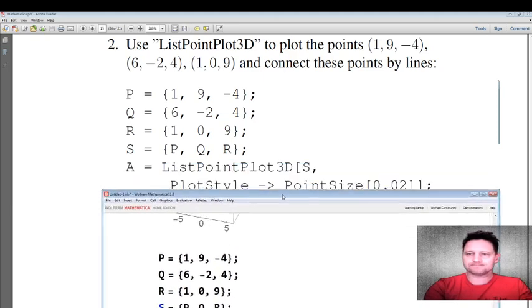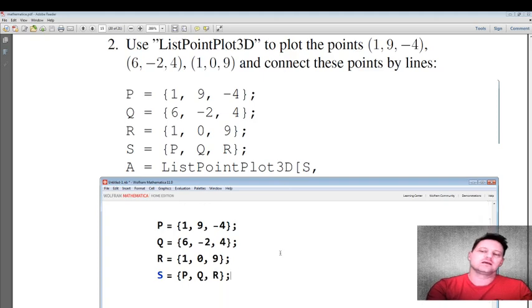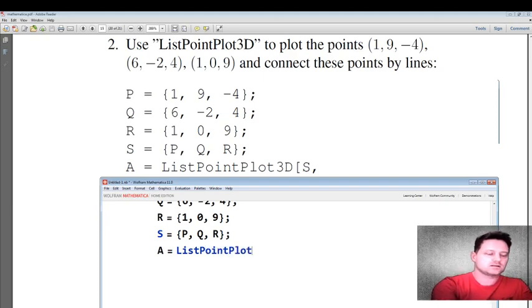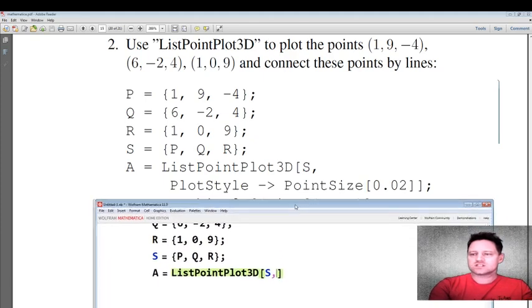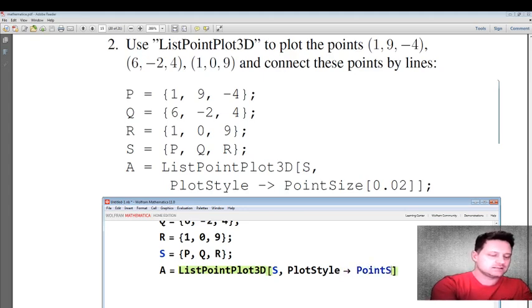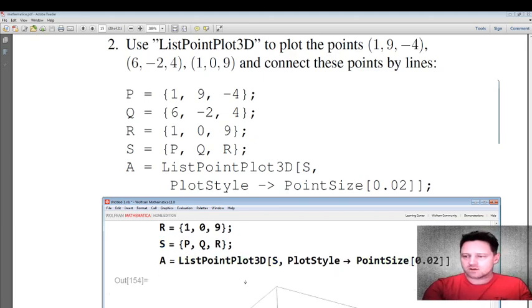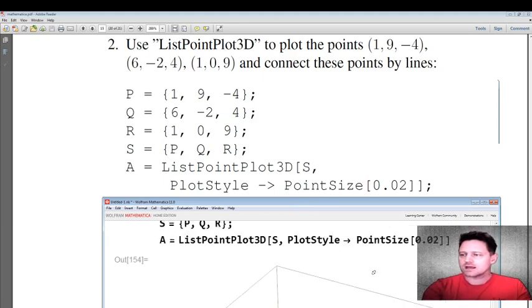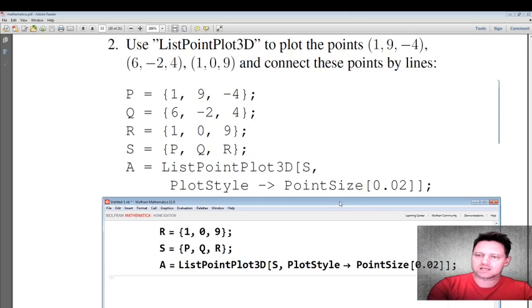And then what we want is to use list point plot 3D. So this is a function that allows you to plot a collection of points in three dimensions. So let's put A equals ListPointPlot3D and the brackets. So I want to do that with the collection of points S. And then we want to specify plot style to increase the point size. So plot style point size and then we'll specify 0.02. All right, shift enter. And then what we'll see is these three points. And you can see that they are a little bit bigger so that we can see them. Okay, now if we put a semicolon, that will suppress the output.